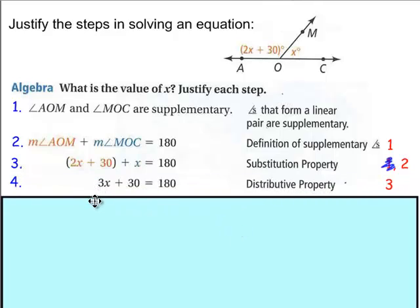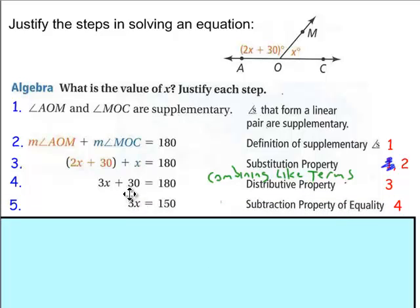Now, we have, they wrote the distributive property. This is combining like terms. Let's keep going. Then, what took place between line four and line five? Looks to me like we had a little subtraction of 30 taking place between the two steps. So then that's where this is coming from, subtraction property of equality. I'm putting a little mark here for four because you're getting your information from this step to then get to that step.